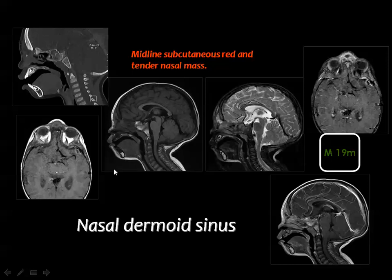On MRI, you cannot see fat — only fluid — on T1 and T2 images. After injection of contrast, you get marginal enhancement representing abscess or inflammatory tissue.